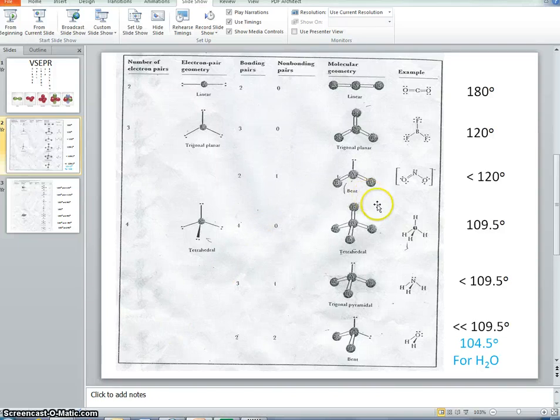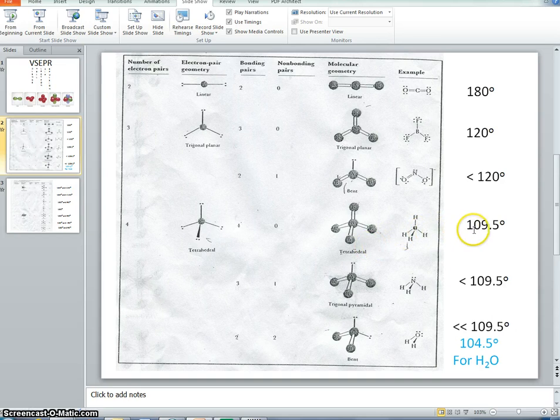In this video, we're going to learn how to draw the tetrahedral shape. Notice that the tetrahedral shape has a bond angle of 109.5 degrees.